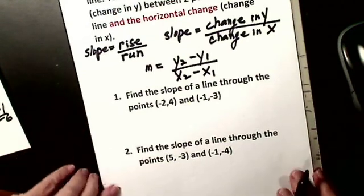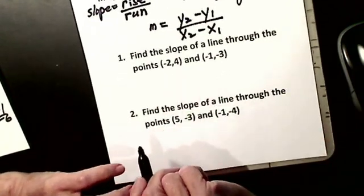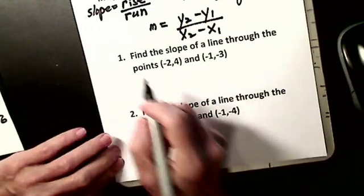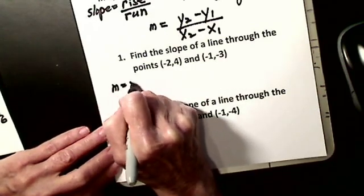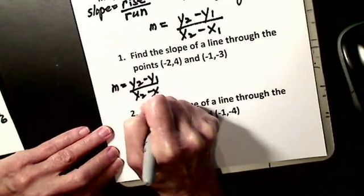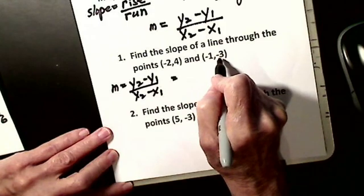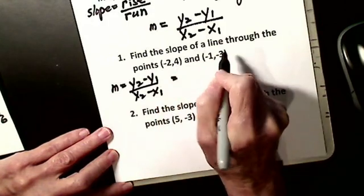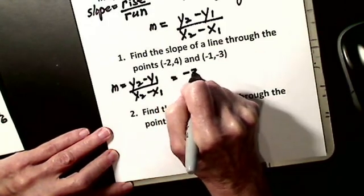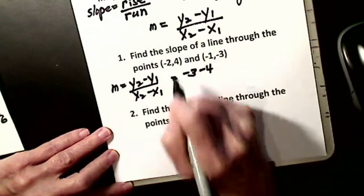So if I had to look at number one and find the slope of a line through these two points, I'll write my formula down. It's the difference of the y's over the difference of the x's. So now, I'll call this point two, this point one. So I have to take negative three minus four. They're the difference of my y's.